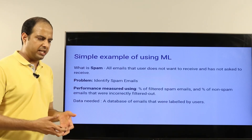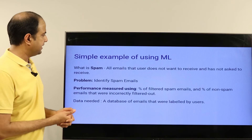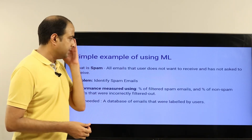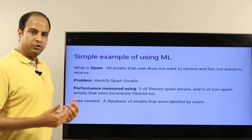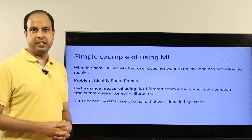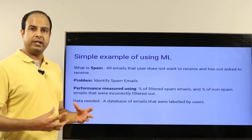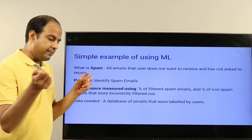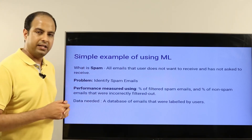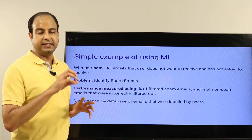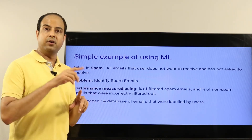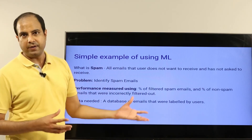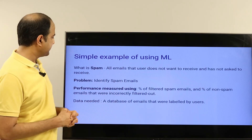A simple and concrete example of machine learning in action is the spam classifier that sits in all our inboxes. If you use Gmail or any other email provider, they all have a spam classifier module. Whenever an email arrives, the spam classifier runs on it and tries to figure out whether it is spam or a legitimate email. If it is spam, it gets moved to the spam or junk folder.